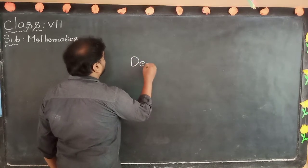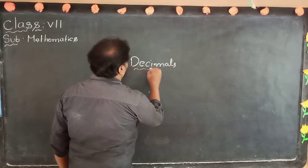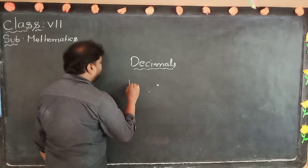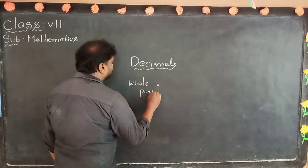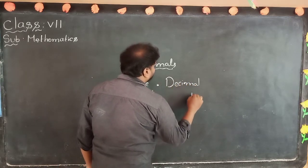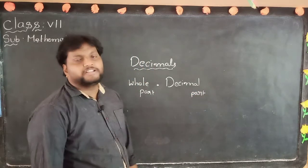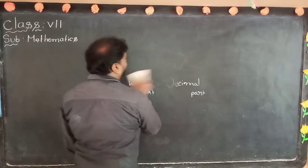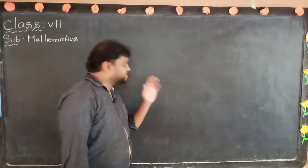The decimal point will separate the whole part and the decimal part. In the whole part we have to take ones, tens, hundreds, thousands as usual. In the decimal part, see, for example if you read this number...